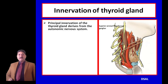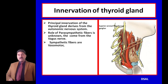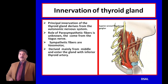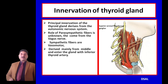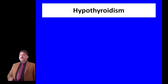The principal innervation of the thyroid gland is derived from the autonomic nervous system. The role of parasympathetic fibers — which come from the vagus nerve — is unknown. Sympathetic fibers are vasomotor in nature and originate mainly from the middle cervical ganglion. From the middle cervical ganglion, sympathetic fibers reach the gland through the inferior thyroid artery; from the superior cervical ganglion, they reach the gland through the superior thyroid artery.